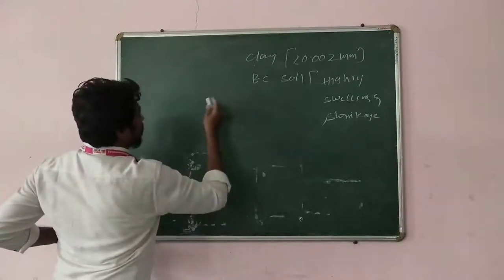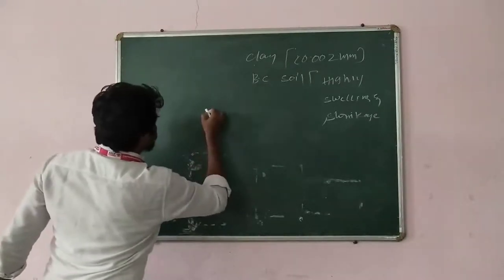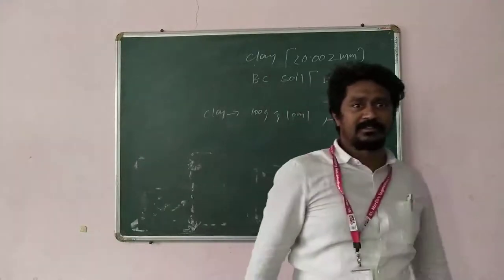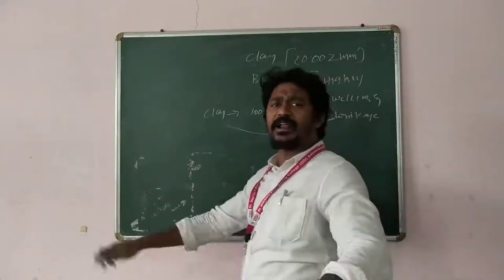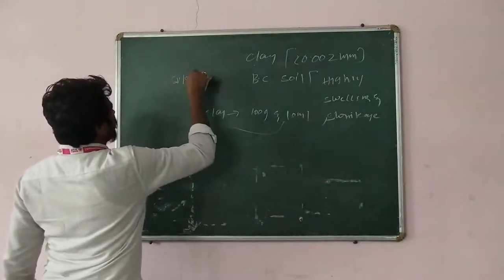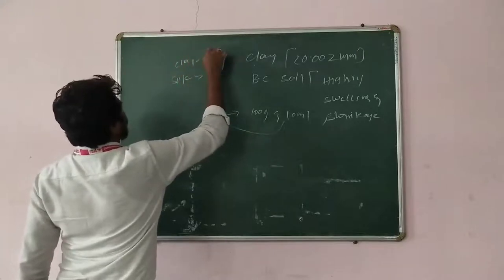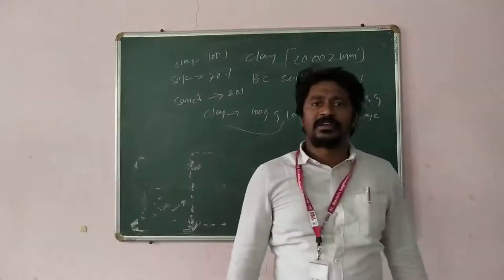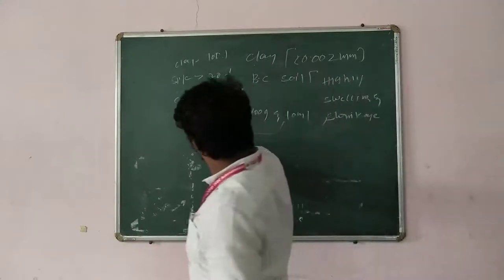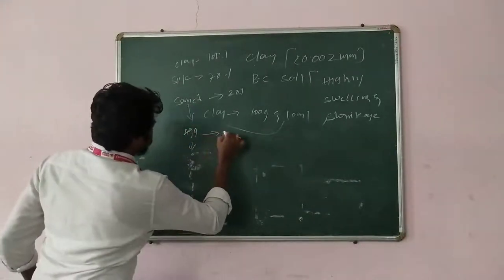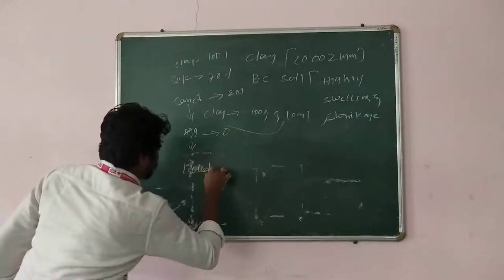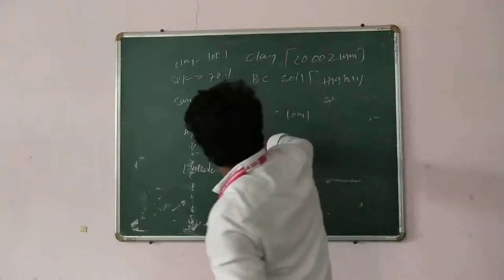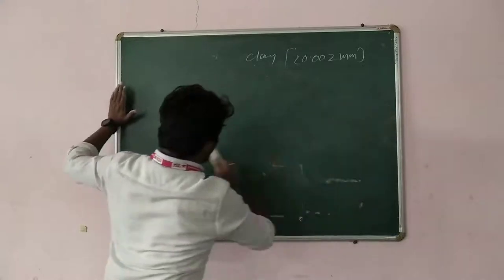When discussing clay: if you take 100 grams of clay soil and add 10 ml of water, it will absorb the entire amount of water. Silt will absorb around 70 percent, clay will absorb 100 percent, and sand will absorb about 20 percent of the water. Boulders and aggregates, being composed of sand-like composition, will absorb 0 percent. This is the reason why clay soils are an important topic to discuss.